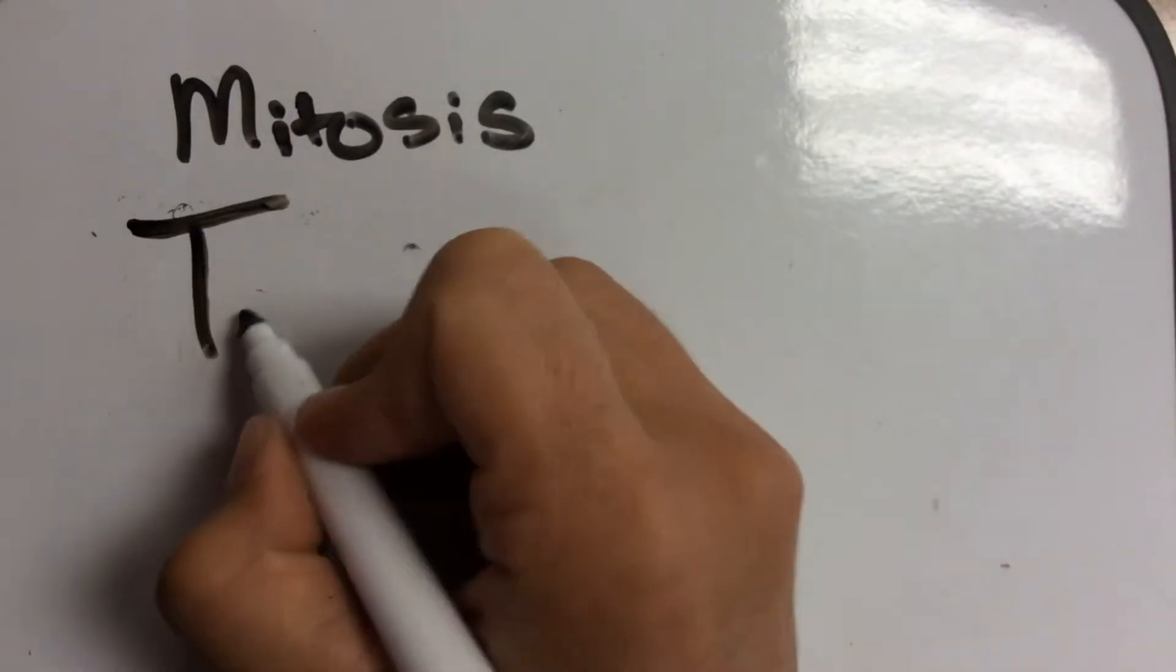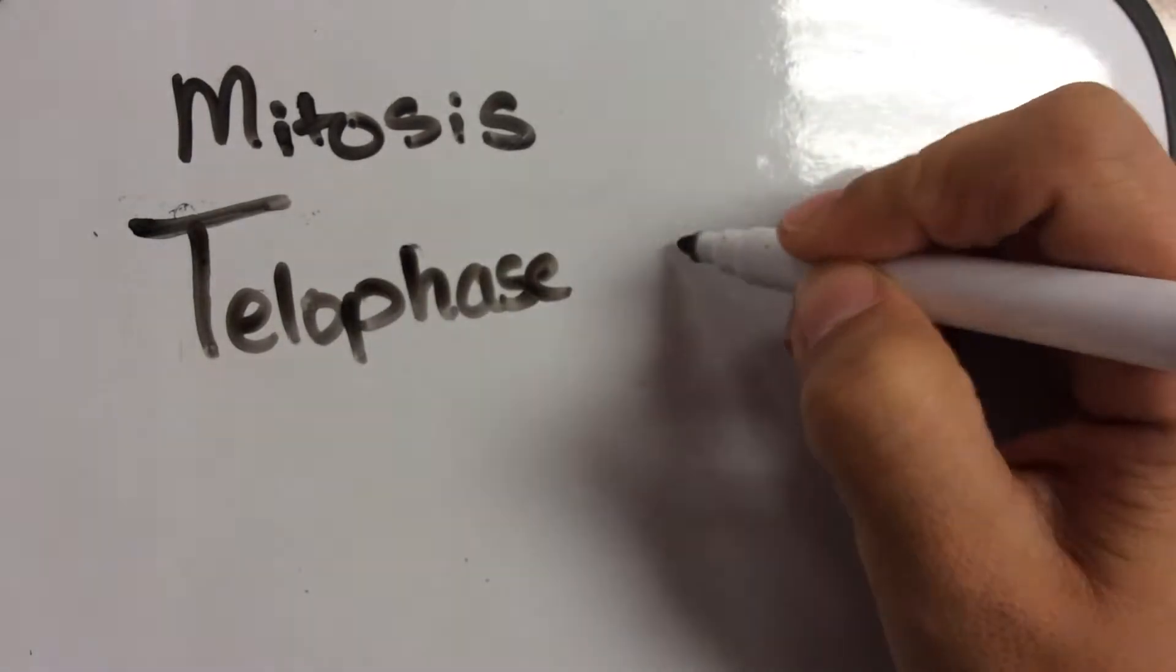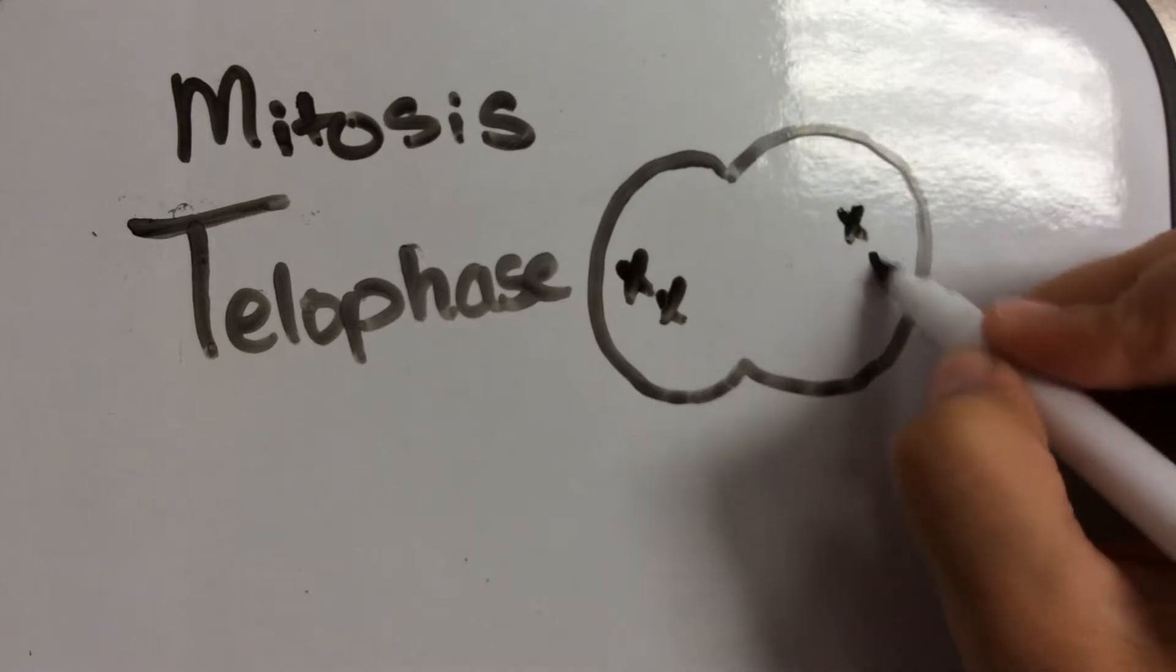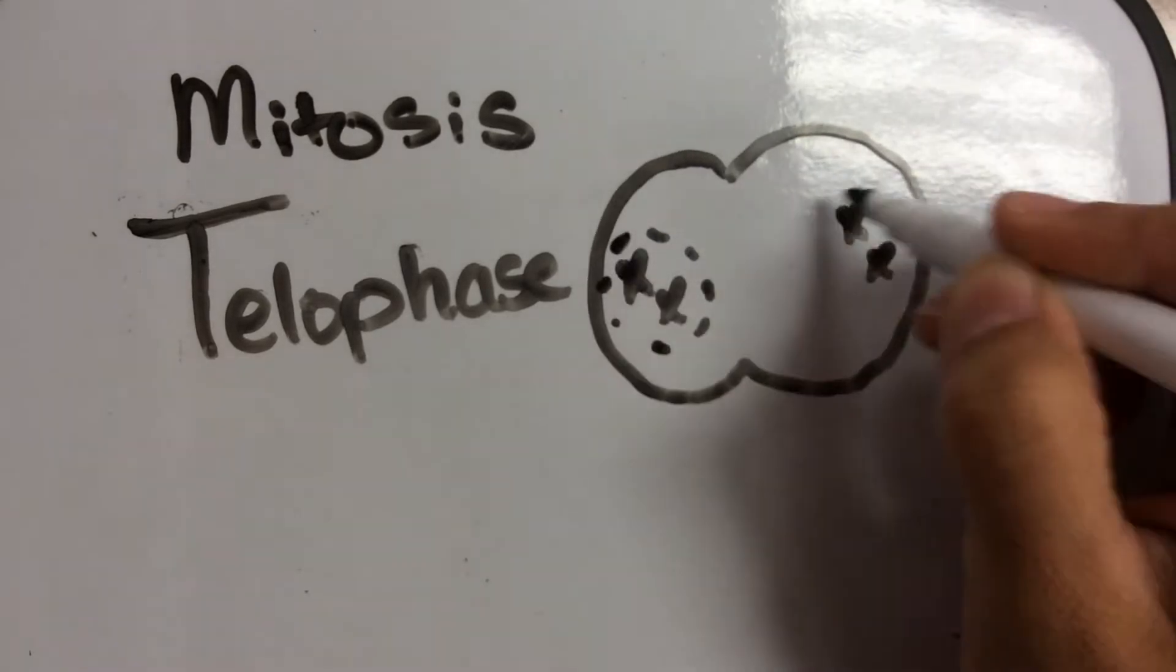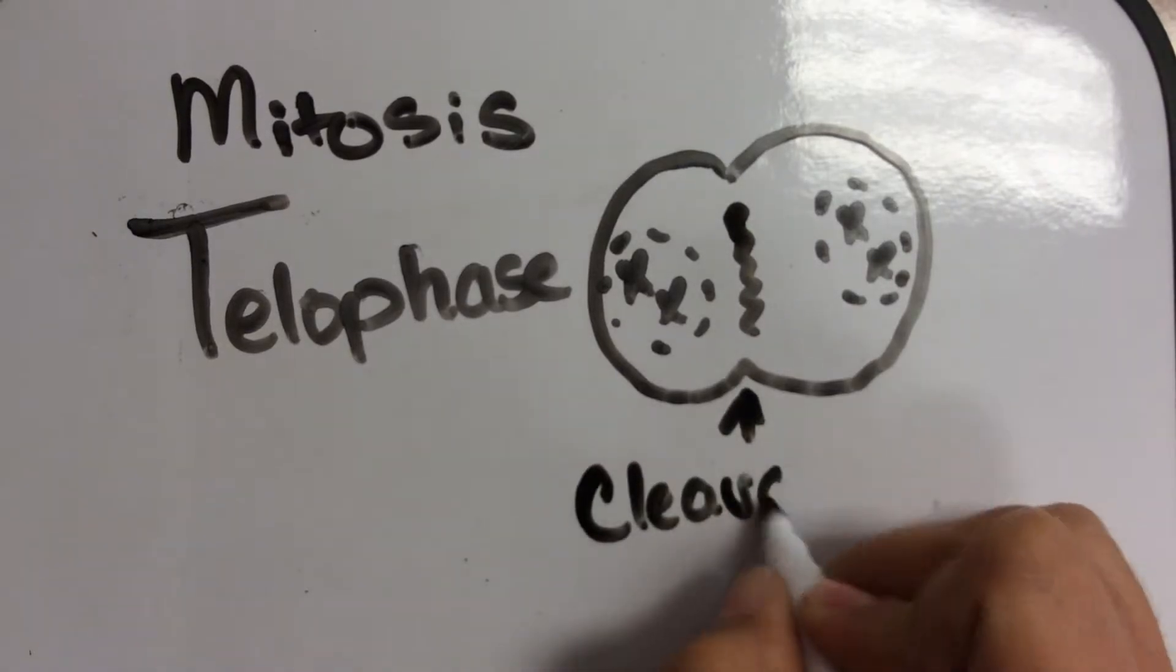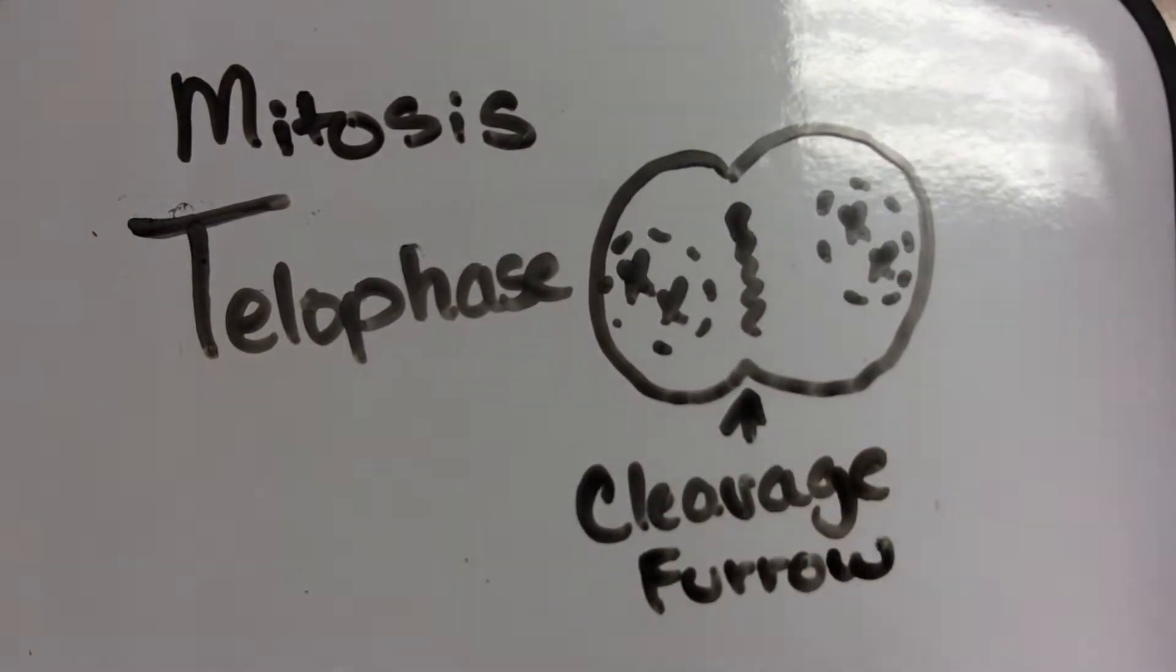The very last step of mitosis is telophase. Telophase, like telephone. Kind of looks like one, too. Like an old school one. So, here you have your chromosomes. The nucleus is going to appear on each side. And you have something called a cleavage furrow. This is what happens before it separates.